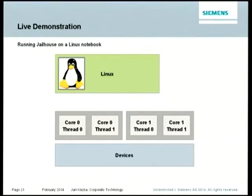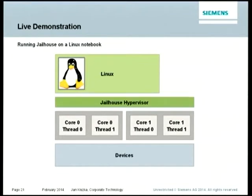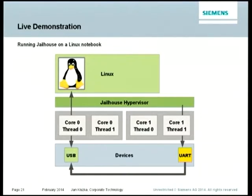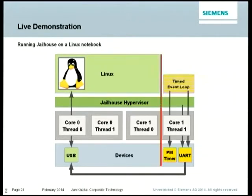Now for a short live demo. I'm reusing my notebook, which has a multicore CPU — two cores with each two threads — running Linux. I'm loading the hypervisor and establishing a special loopback setup. The hypervisor has a serial console just to dump status, and we're also using the serial console to dump the workload running there, feeding back the serial port via USB cable to the console so you can see it on screen.